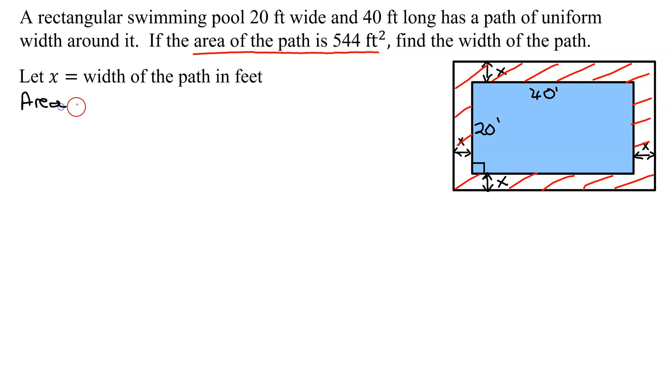So the area of the pool equals length times width. What was the length? 40 feet. What was the width? 20 feet. So it's 40 times 20, which is 800 square feet.